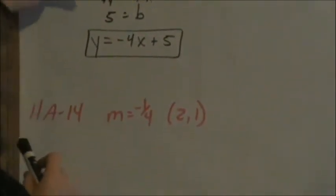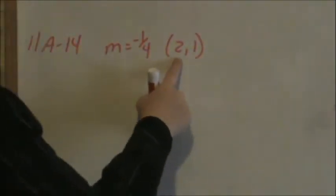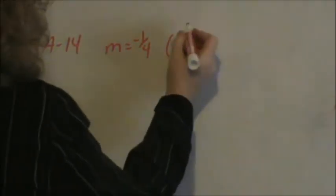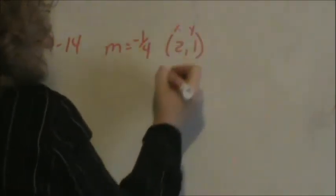That was 11a number 11. Now let's jump down to 11a14. We are given the slope as negative 1 fourth, and we are given the point 2, 1. The 2, 1 gives us an x and y value.